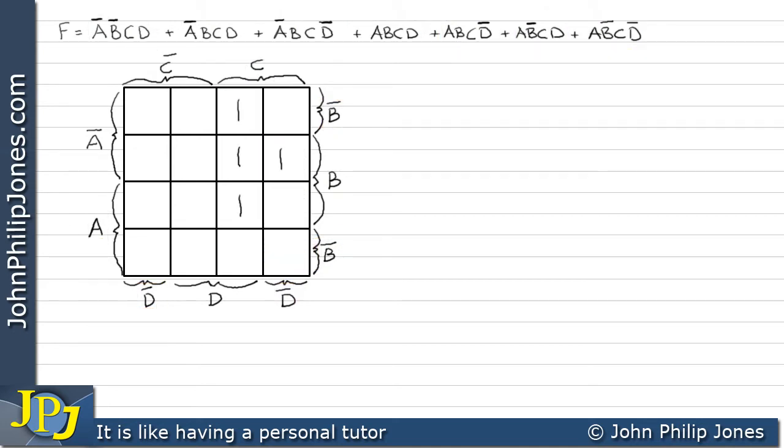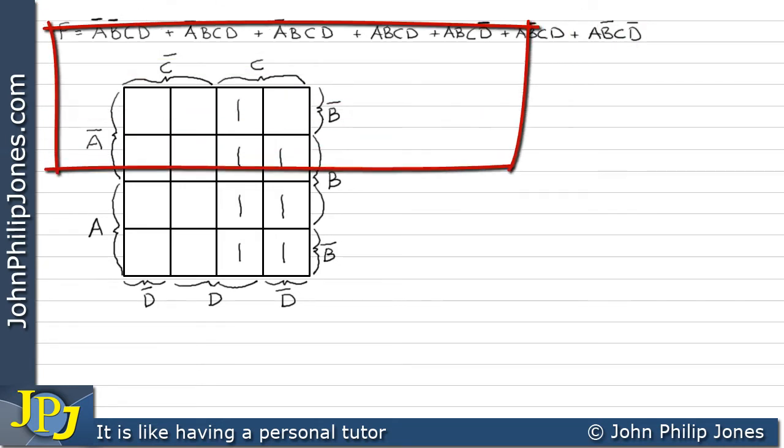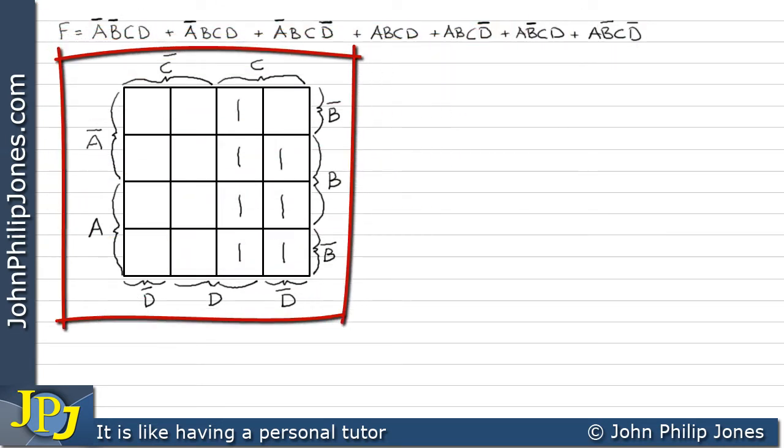Consequently, we fill each of those areas with a 1, as you can see here. We have just plotted a 4 variable sum of minterms onto a 4 variable Karnaugh map.